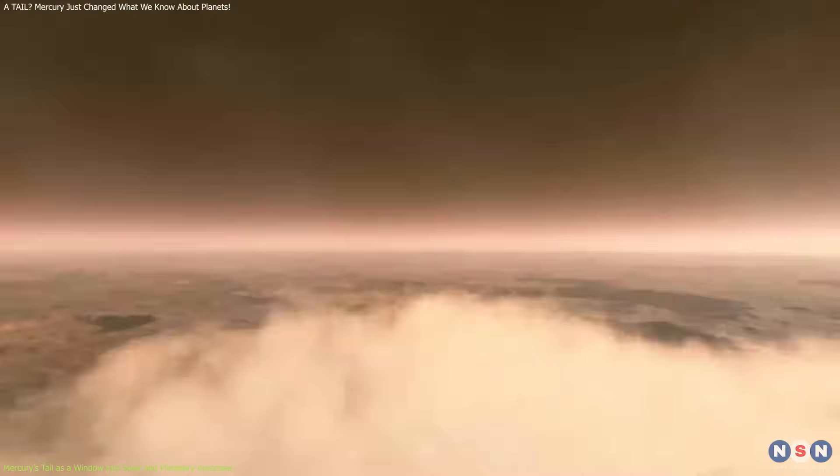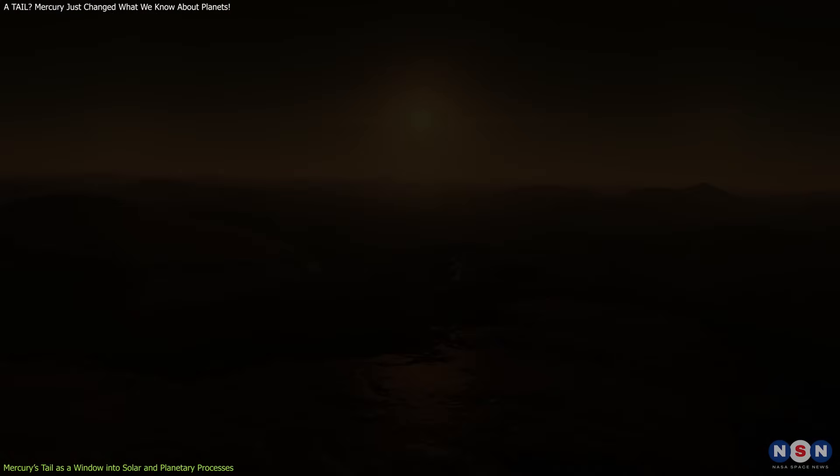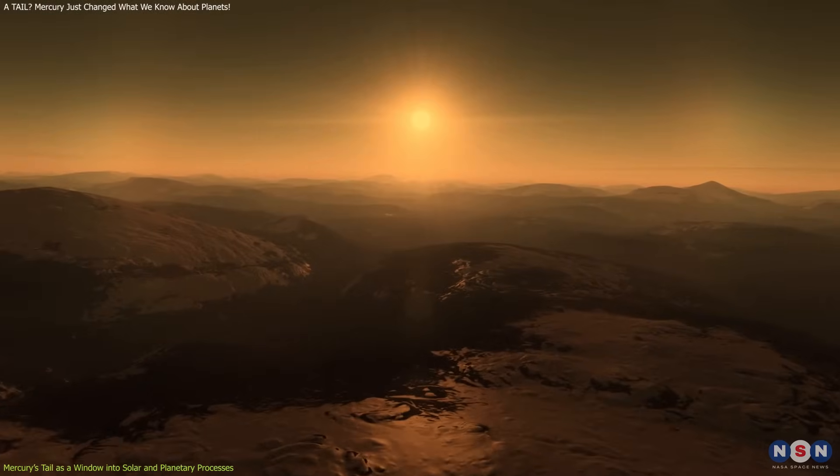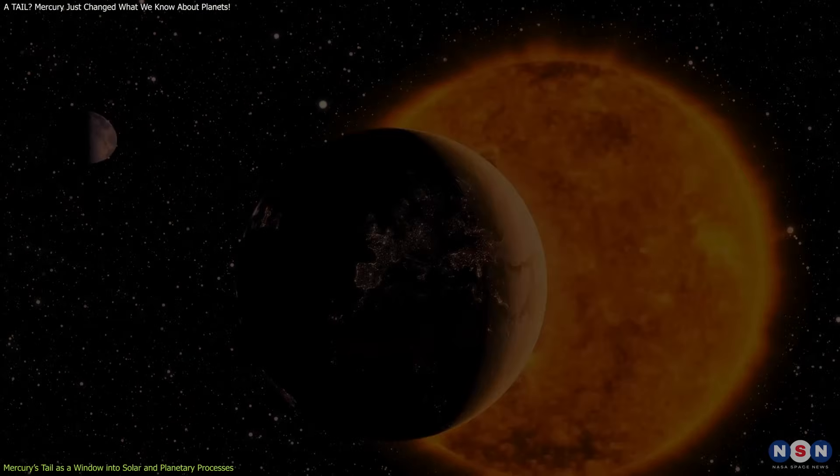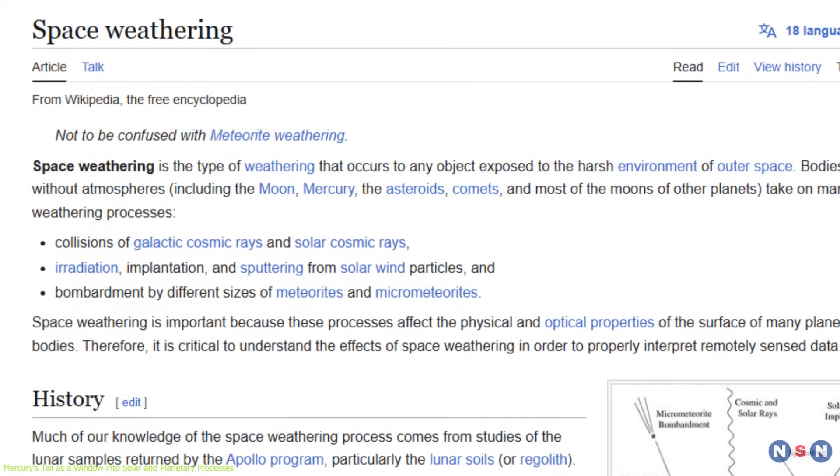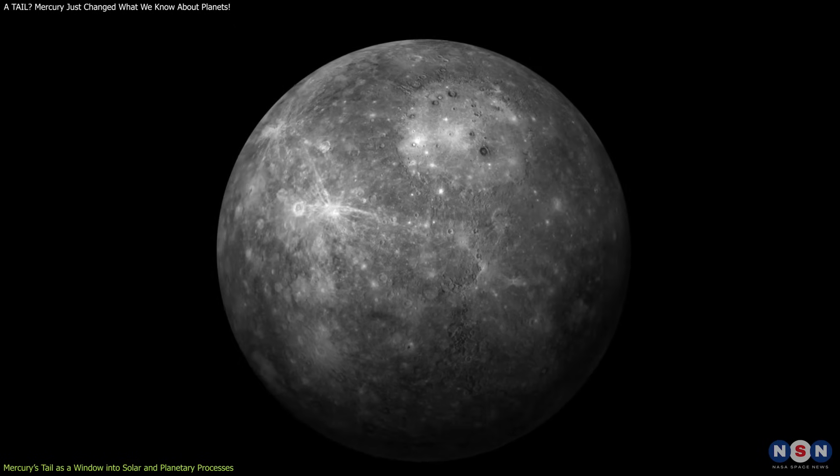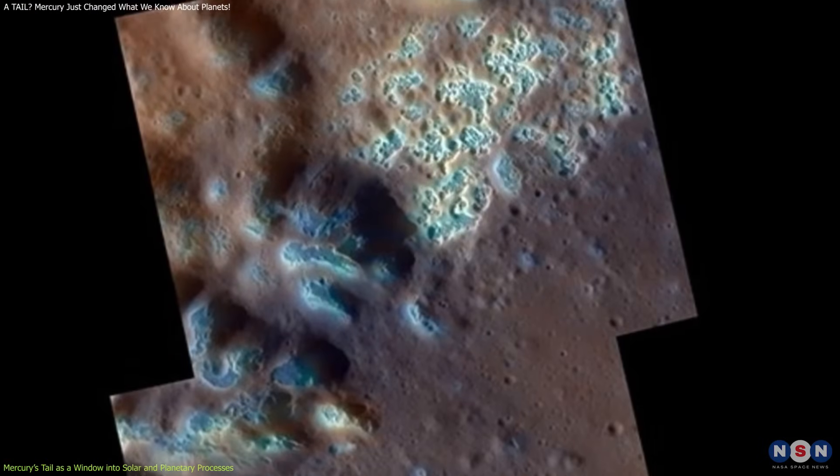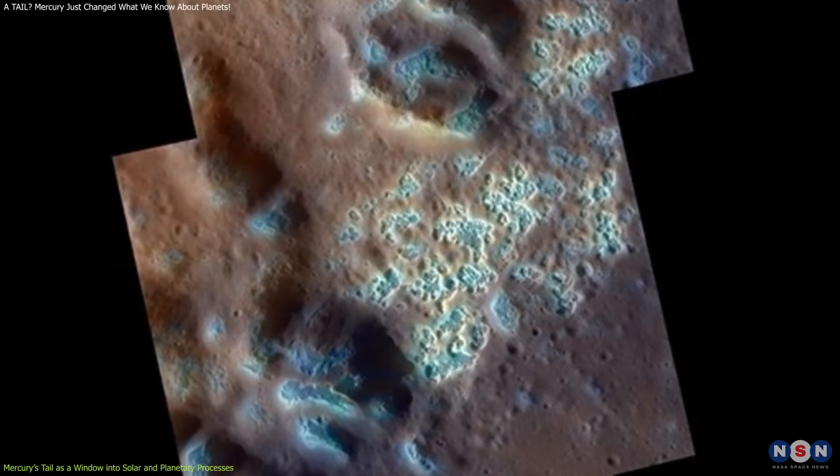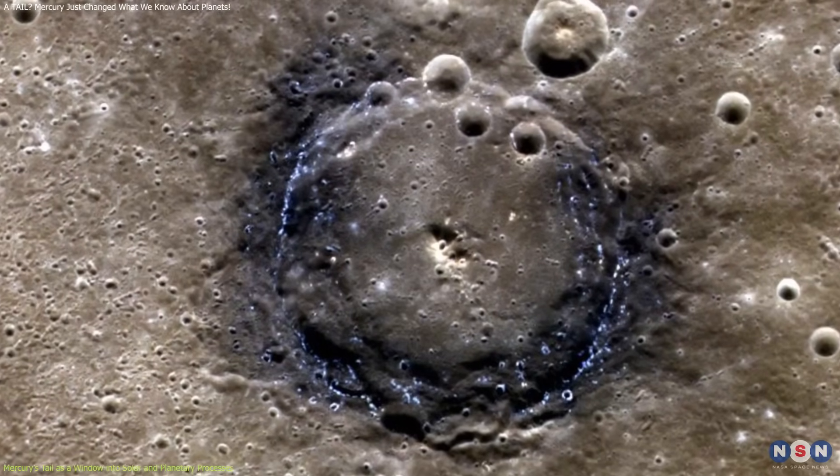Understanding how solar radiation and particle impacts strip away a planet's surface provides insights into long-term surface evolution. Over millions of years, these processes can reshape a planet's crust and surface chemistry, affecting how reflective or dark a surface becomes, which in turn influences the planet's temperature and behavior. This is especially important when it comes to space weathering, the gradual transformation of planetary surfaces by solar and cosmic forces. Mercury is the perfect laboratory for studying this because it's exposed to some of the harshest space weather in the solar system. Scientists believe that its high reflectance patches, called hollows, might be related to materials being ejected and altered by these constant interactions.